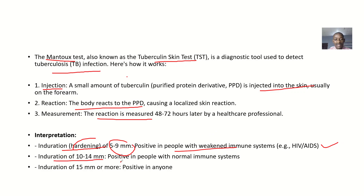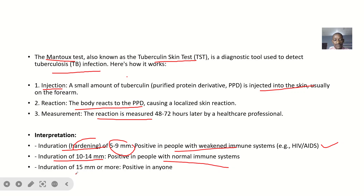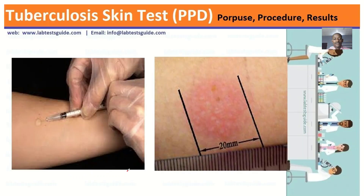An induration of about 10 to 14 millimeters means it is positive in people with a normal immune system — so you have tuberculosis but a normal immune system. Then, an induration of about 5 millimeters or more can be positive in anyone. That is the tuberculosis skin test interpretation.